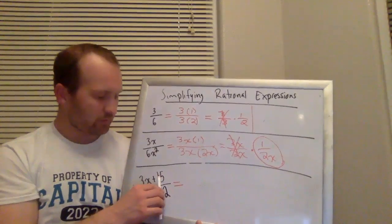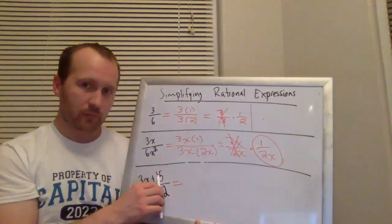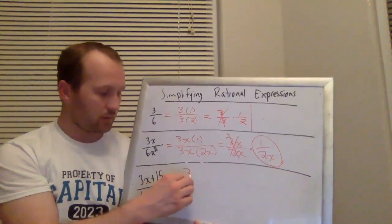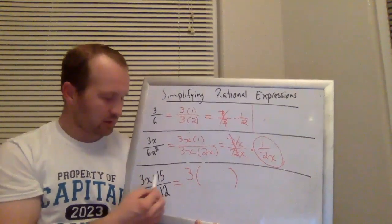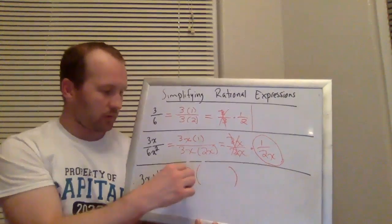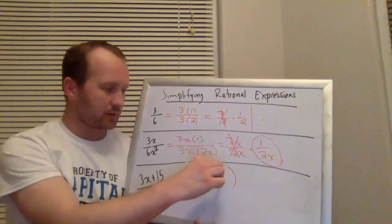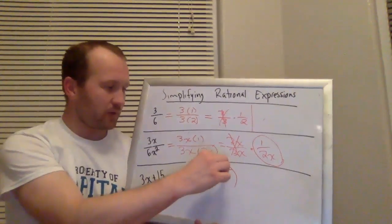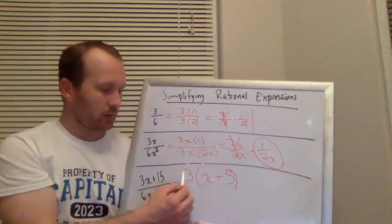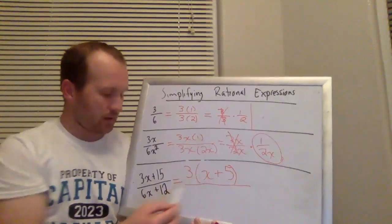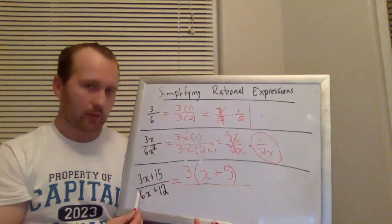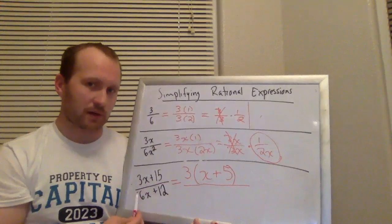To do that, I basically reverse the distributive property. I say, what does 3x and 15 have in common? They both have a 3. So 3 times what would give me 3x plus 15? Well, 3 times x would give me the 3x. And 3 times 5 would give me the 15. So 3 times x is that. 3 times 5 is that. Now in the bottom, these both have a 6 in common.